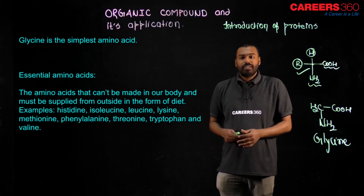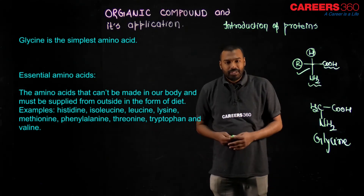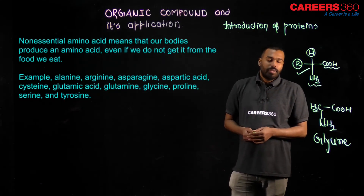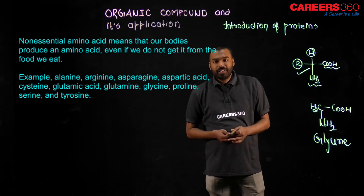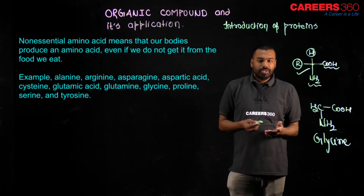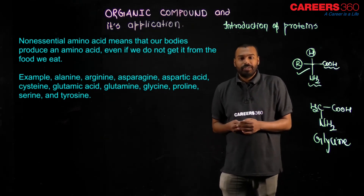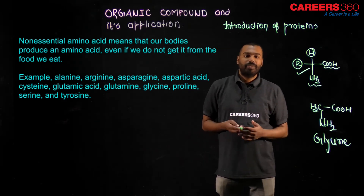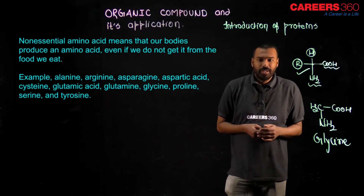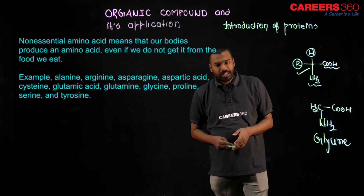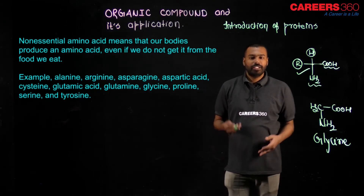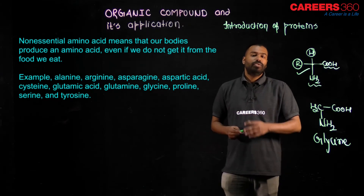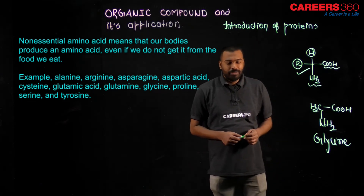Non-essential amino acids are those our body will produce even if we don't get them from food or supplements. Examples include alanine, arginine, asparagine, aspartic acid, and glutamic acid — these are the non-essential amino acids.